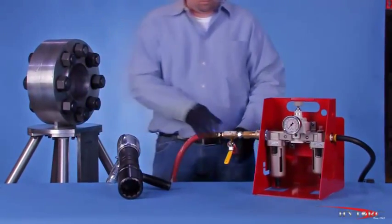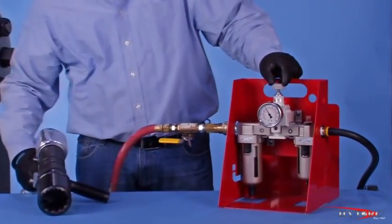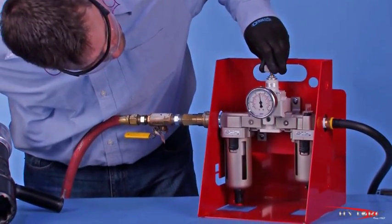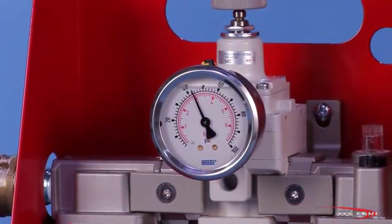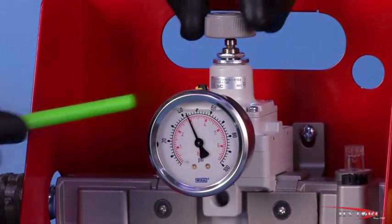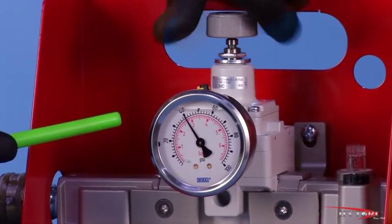With the wrench on a stable surface, turn on the air supply. Start the tool and adjust the incoming air pressure up to 50 psi by turning the regulator knob. Always set pressure from lower to higher on the gauge. If you go past the number, back off and set it again from lower to higher for consistency.